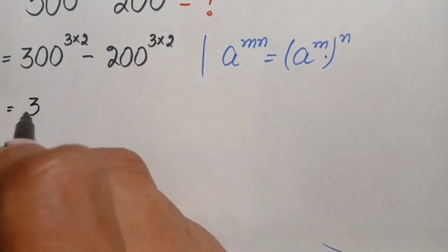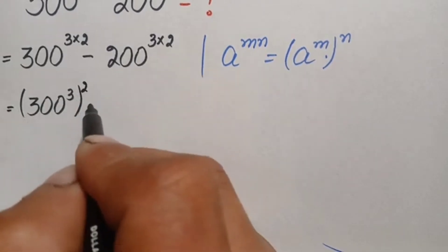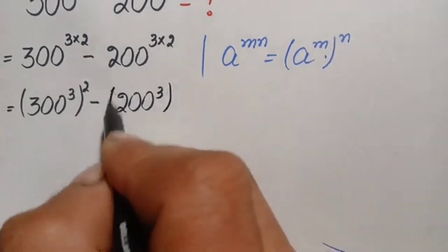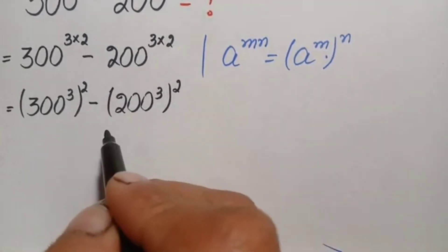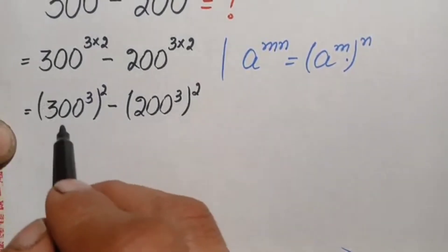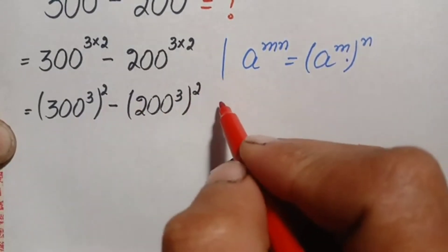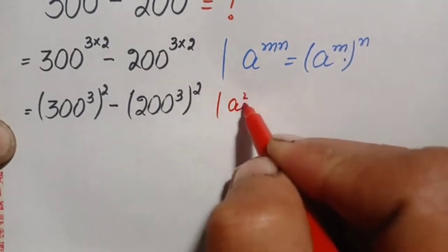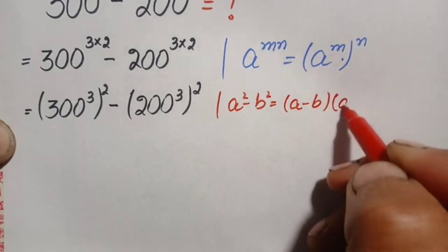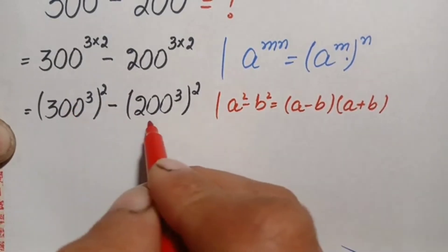This becomes 300 raised to power 3, whole squared, minus 200 raised to power 3, whole squared. Both numbers are now in square form, so we use the algebraic identity a² - b² = (a - b)(a + b), where our a is 300³ and our b is 200³.